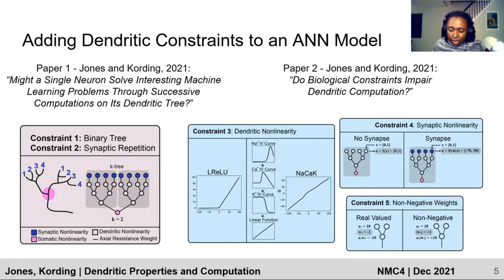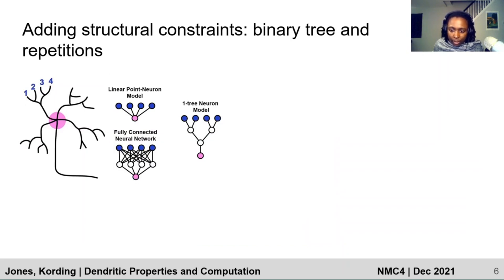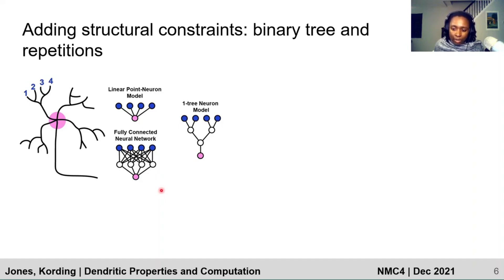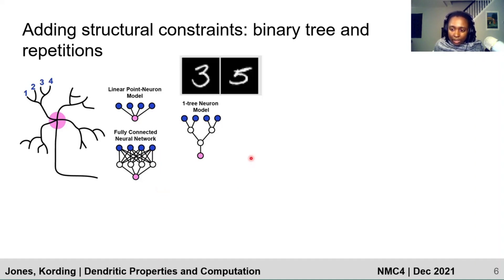As we progress through this project, we will add each constraint on top of others. In the first paper, the experimental neuron model we added structural constraints to was compared to two control models: a point-neuron-like neural linear classifier as an expected lower bound, and a parameter-matched fully connected neural network (FCNN) as an expected upper bound. All models were made to perform a binary classification task for seven different datasets, but we will only be showing the results for the binary classification version of MNIST.